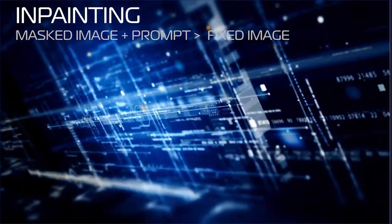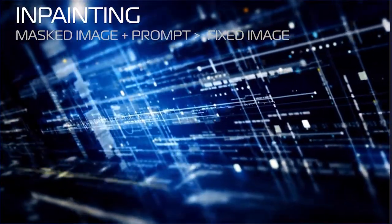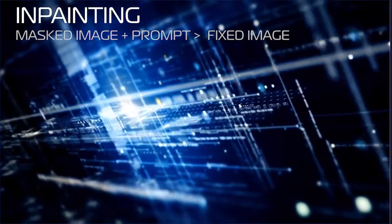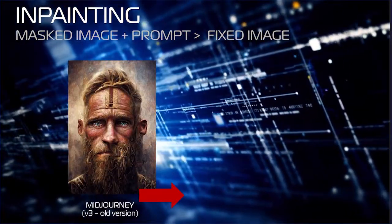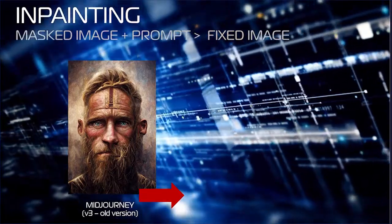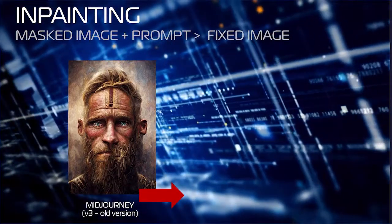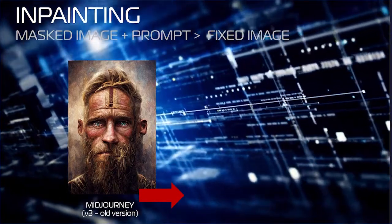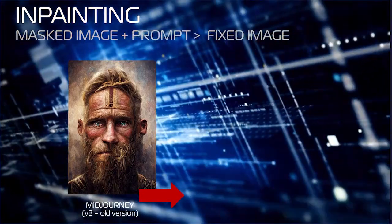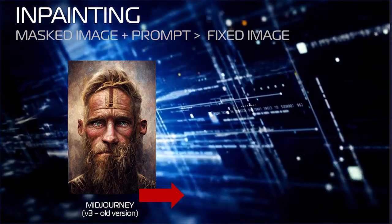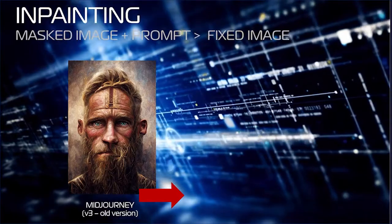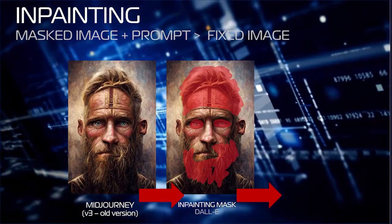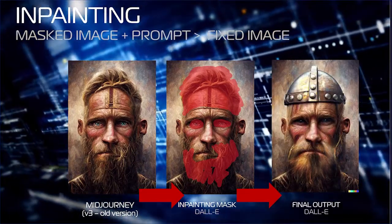Inpainting is another method. Rather than just generating content based on surrounding data, inpainting takes the text content and the prompt into account when building the image. You can add objects to an existing image rather than just fixing issues — this is like content-aware fill in Photoshop, but much more powerful. In this case, I generated a Viking warrior image in an old version of MidJourney with a strange flesh-shaped helmet and a messed-up face. I'm going to mask this in DALL-E and ask it to create a new Viking — it created a distinctive metal helmet and fixed his face.